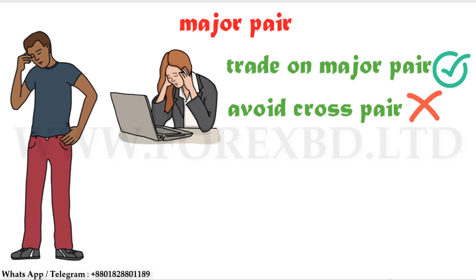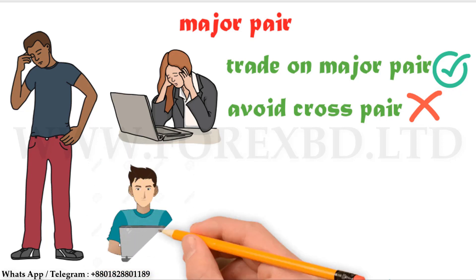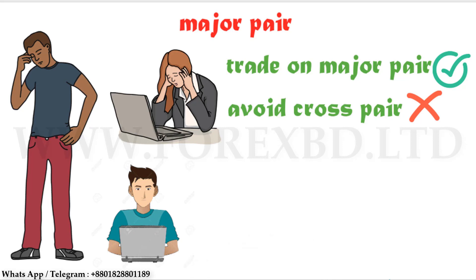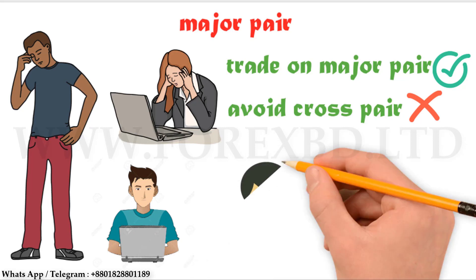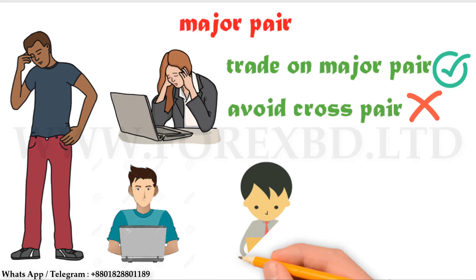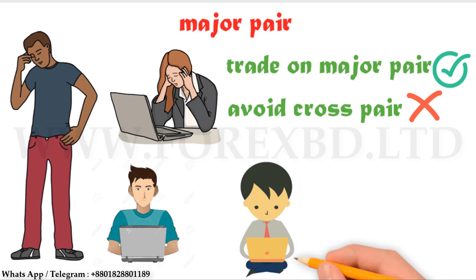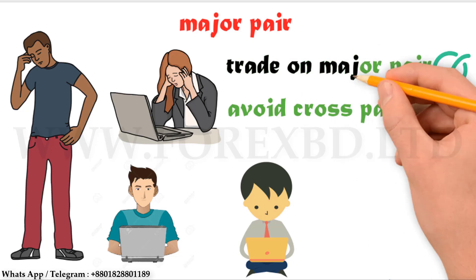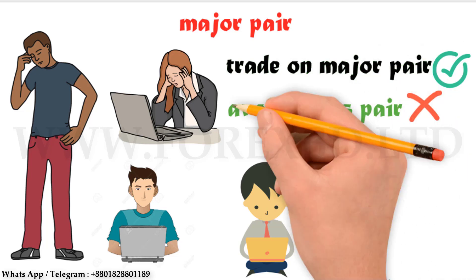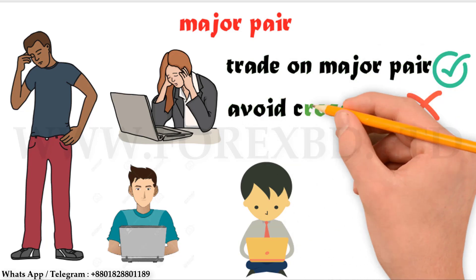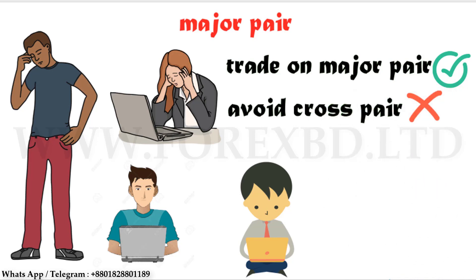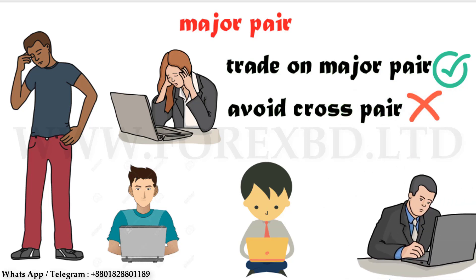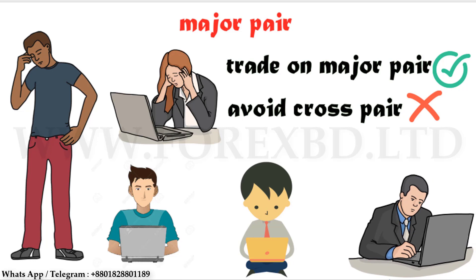Major pairs have very low spread and low fee, so you will have more profit. Cross pairs have more spread and fee, so if you make a loss the loss amount will be more, and if you make a profit the profit amount will be less. You should always trade in major pairs — especially USD-based pairs. This is very effective for beginners.